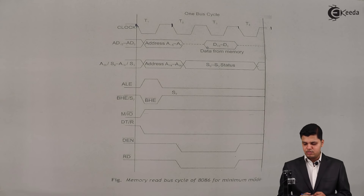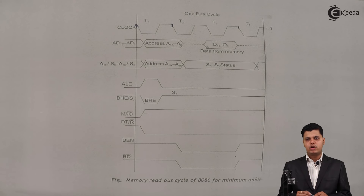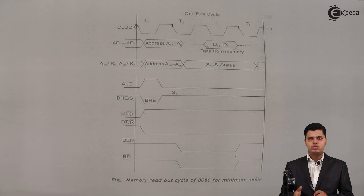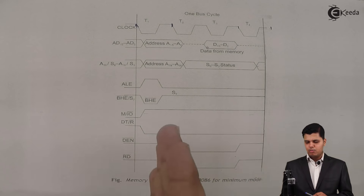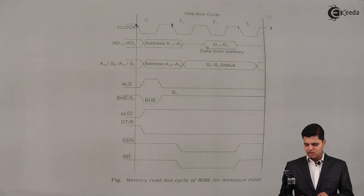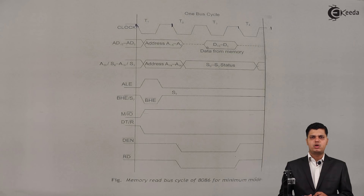To summarize, a machine cycle is a combination of four T-states in the 8086 microprocessor. Operations are performed in T1, T2, T3, and T4 states, and the combination of all these operations constitutes one machine cycle. In this lecture, we have seen the memory read and memory write cycle for the 8086 microprocessor.